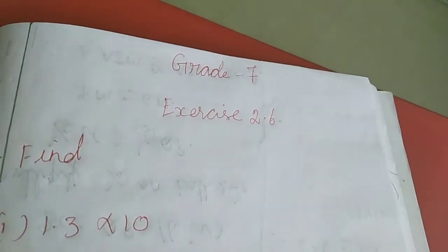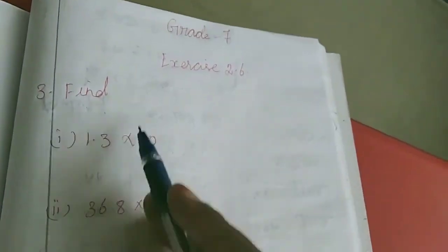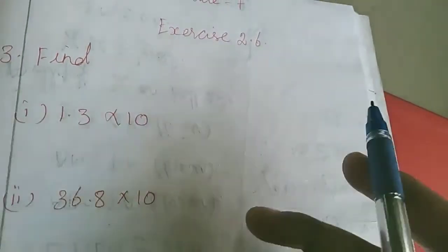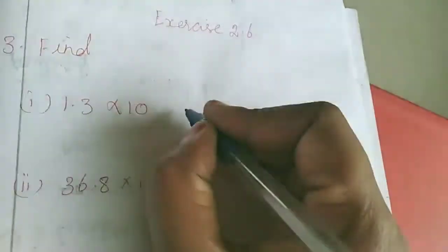Hi dears, in last class we completed exercise 2.6, first two sums. Now third sum, third sum is 9. Just multiply and we want to tell the answer. I am going to multiply.